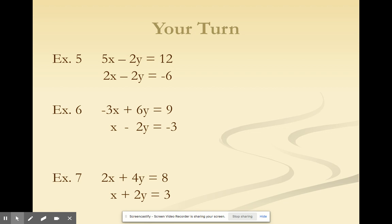So, if we multiply the bottom equation by a negative, it will make negative 2x plus 2y equals 6. And therefore, our y's are now opposite coefficients, so we can add our equations together.